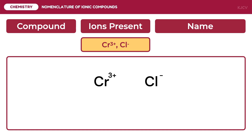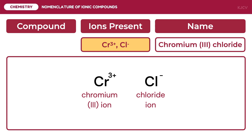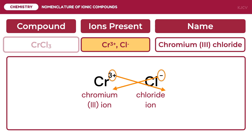Next, we are going to write the formula and name for chromium with a positive 3 charge and chlorine with a negative 1 charge. Chromium having a charge of positive 3 is our chromium(III) ion. Chlorine as an ion is chloride ion. Thus, we have chromium(III) chloride. After doing a criss-cross of charges, the ionic formula will be CrCl₃.